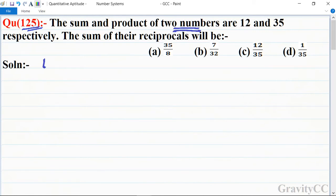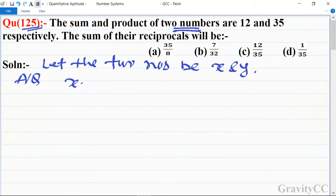According to the question, the sum of the two numbers is equal to 12 and their product is equal to 35.